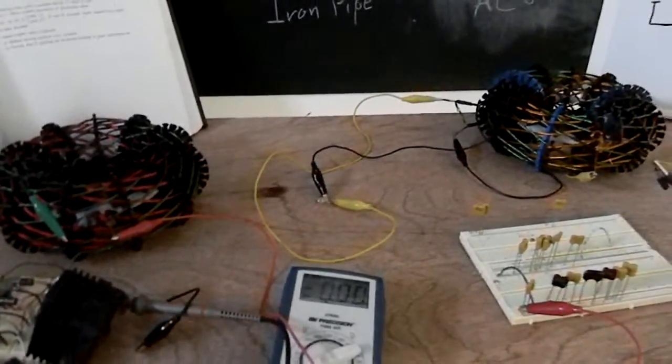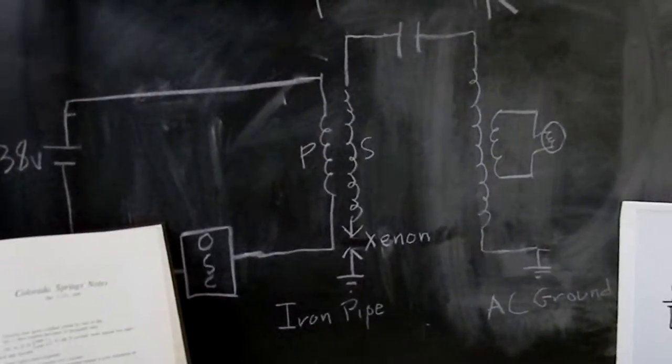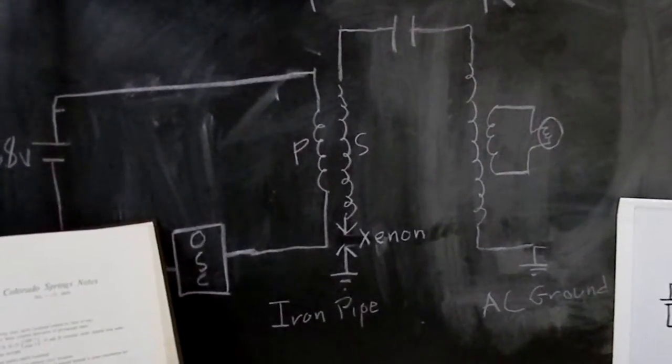Alright, so we're going to show a little spectrum analysis of using a spark gap in between the secondary and the iron pipe.